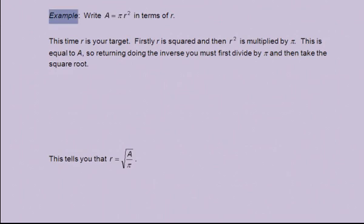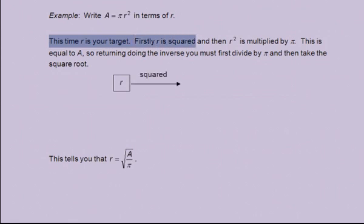Now for example, write A = πr² in terms of r. This time, r is your target. Firstly, r is squared, to give r². And then r² is multiplied by π, to give πr². This is equal to A.